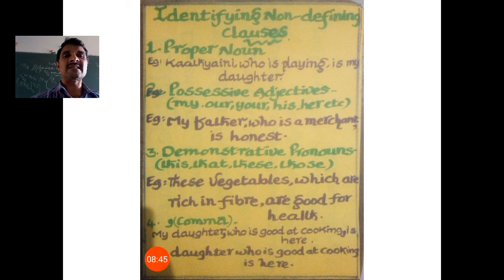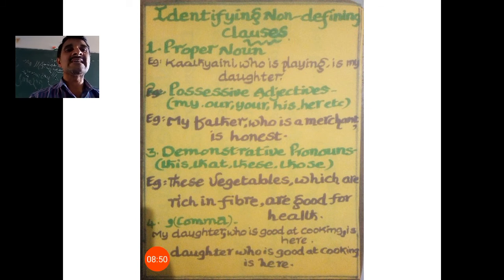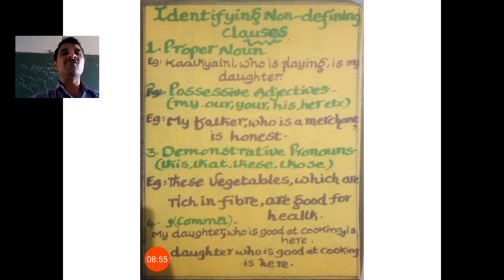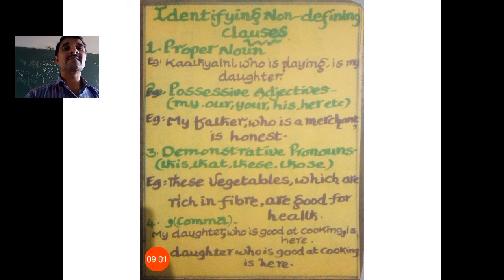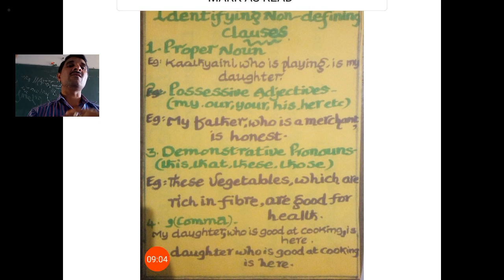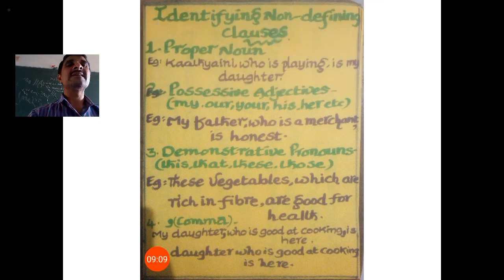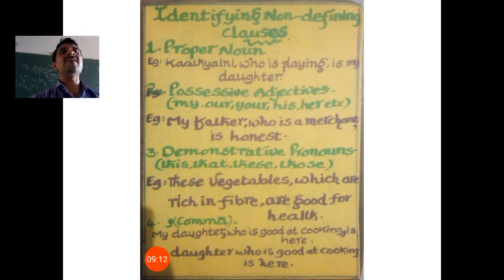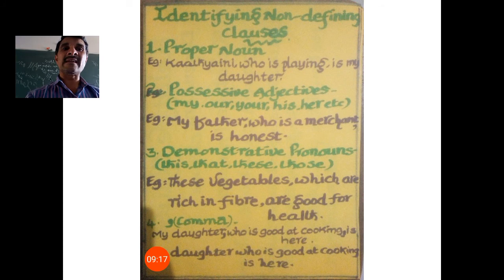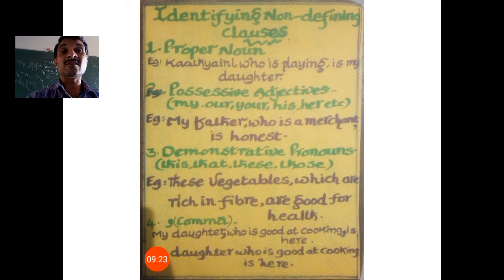The second clue: possessive adjectives. Possessive adjectives in English are: my, our, your, his, her, etc. For example, 'My father, who is a merchant, is honest.' 'My father' — identity already given. 'Who is a merchant' is additional information about my father. 'My father is honest' is enough. The additional information given by the relative clause here is called redundancy.